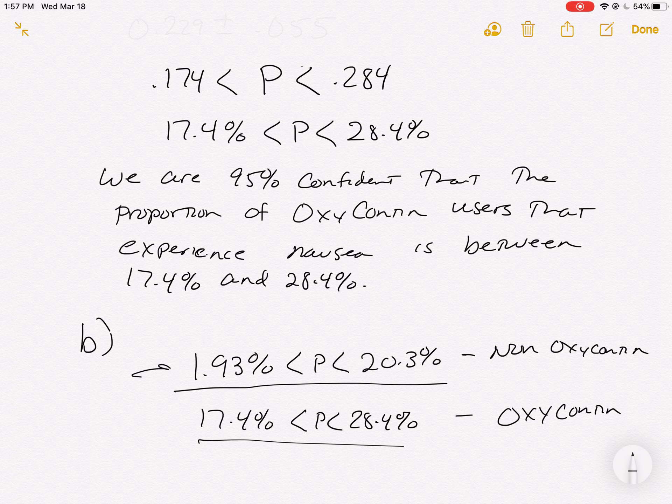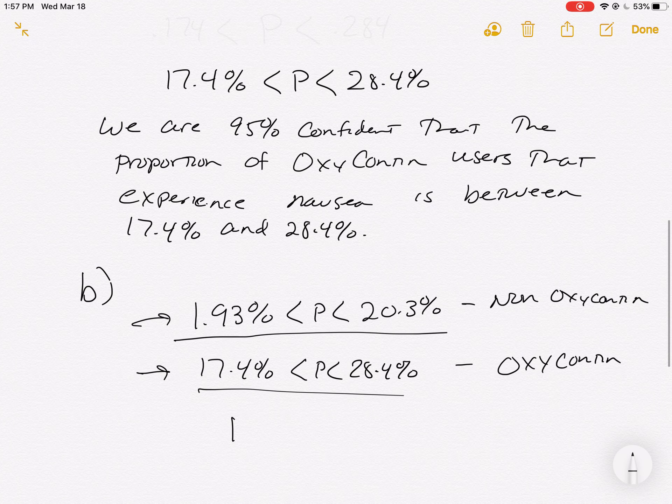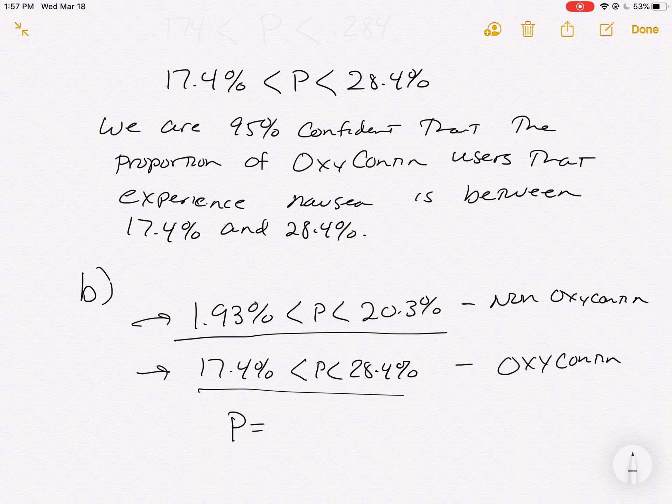If we look at the top one and the bottom one, there's common values of P that could be there. So, for instance, P could absolutely work out in the top one to be something like 20%. And 20% can work out of the bottom one as well. It's in both of those. So, because it's in both, it would not be appropriate for us to conclude that OxyContin increases our likelihood of getting nausea.